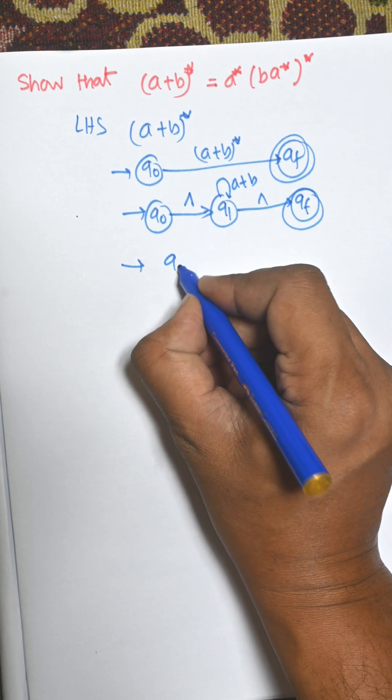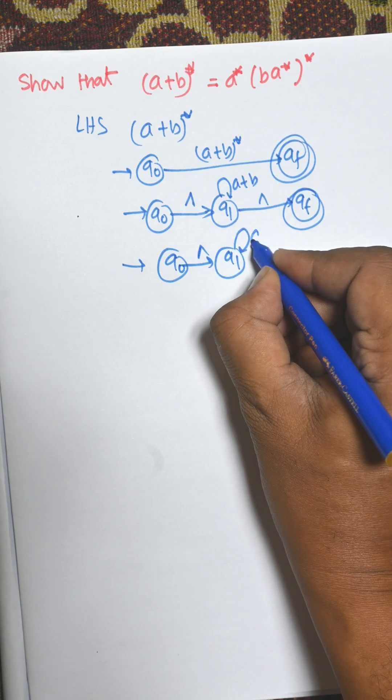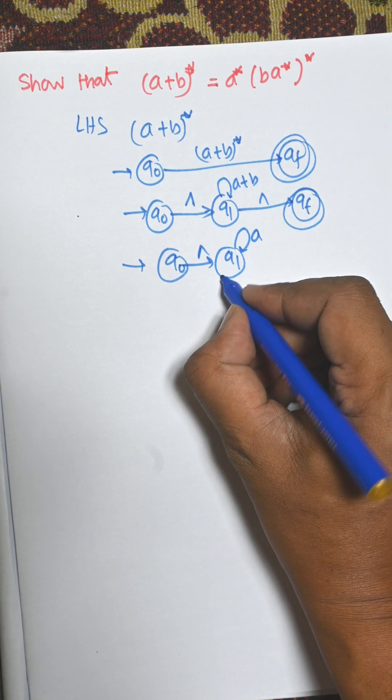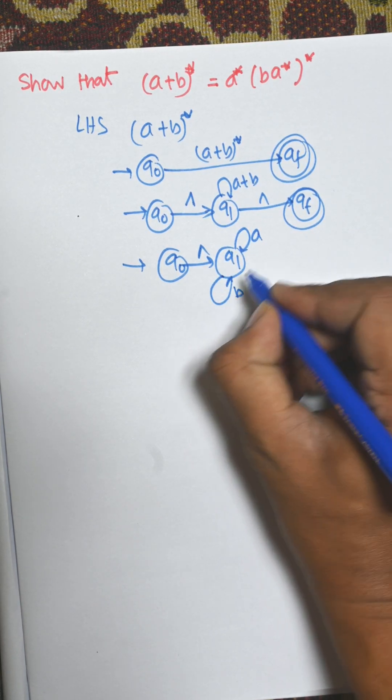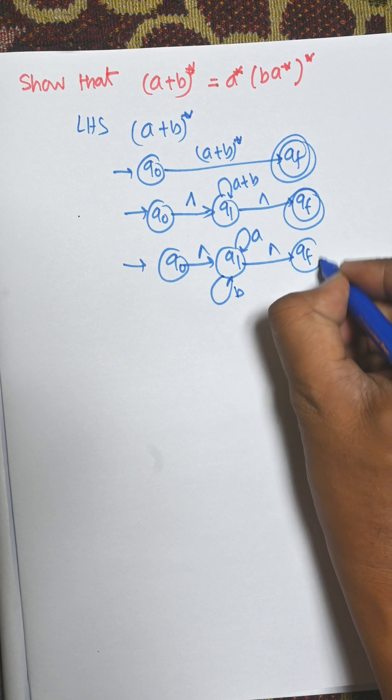Now for a+b, q0 to empty symbol q1, there is a from q1 to q1 again and b from q1 to q1. And from q1 to qf there is another empty symbol.